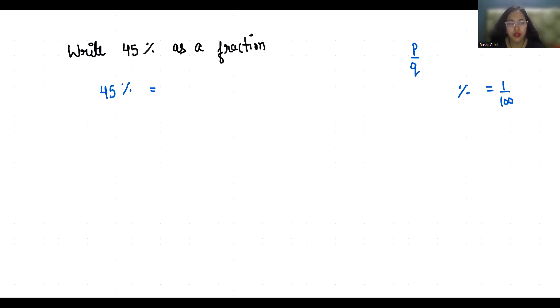So we can write 45 times, and remove this symbol and write 1 by 100. So it becomes 45 by 100. Now it comes in p by q form, but we are going to reduce it.